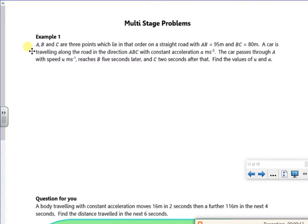So it says A, B and C are three points which lie in that order on a straight line. So I've got A, so A to B is 95, and B to C is 80 metres.